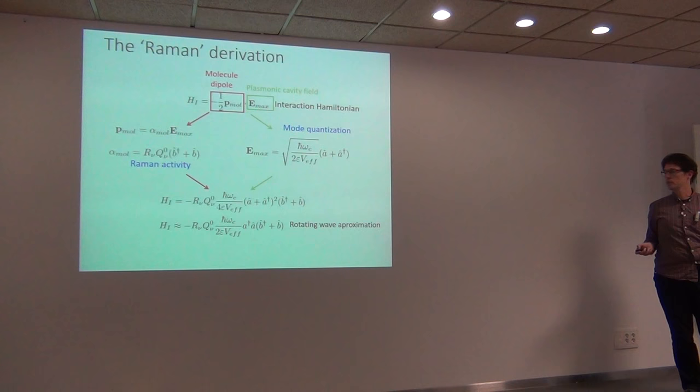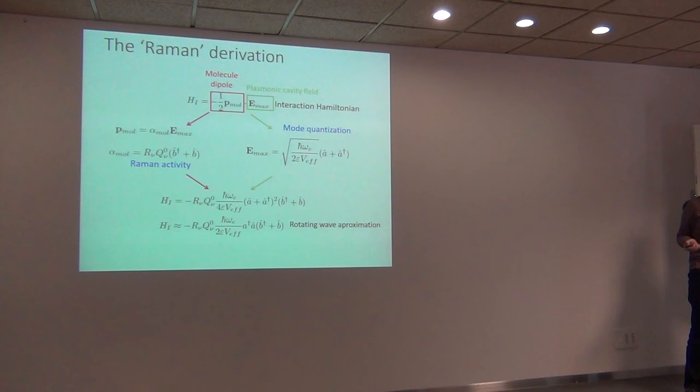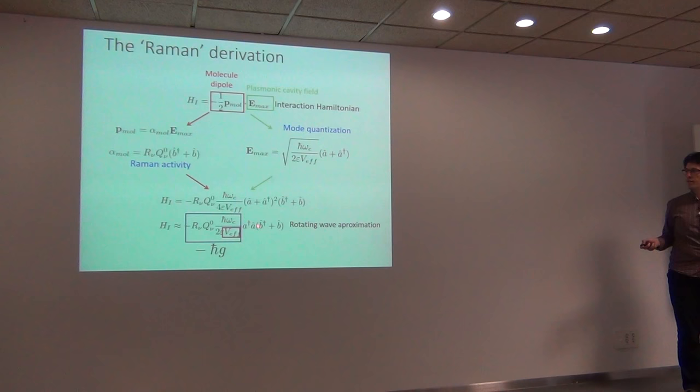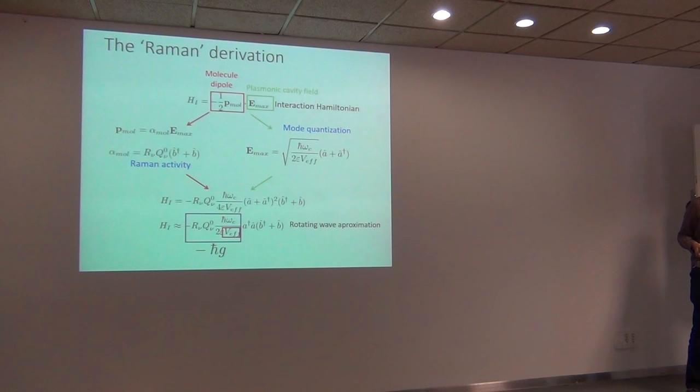If you have seen quantum optomechanics or remember Jeremy's talk, this is exactly the same Hamiltonian as quantum optomechanics, giving us exactly the value of G. This is particularly interesting because optomechanics is known to have very rich physics. Notice also that G is inversely proportional to the mode volume, which is where plasmons become really interesting — the big advantage of plasmons is that they can have very small volume.